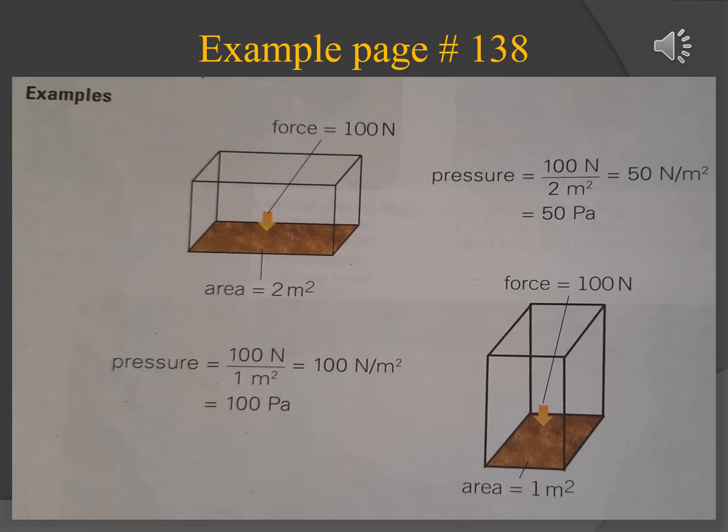In the second block, a force of 100 newtons acts upon the base area of 1 meter square, so pressure equals 100 newtons over 1 meter square, which equals 100 newtons per meter square, or pressure equals 100 Pascal.